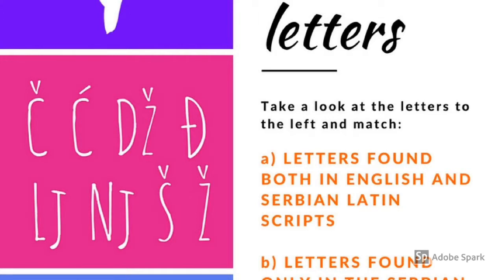The next letter is like 'jazz' and 'George' — again the tip of the tongue is close to your teeth. The next letter is like 'Djokovic'; it is soft, so the middle of the tongue goes up.